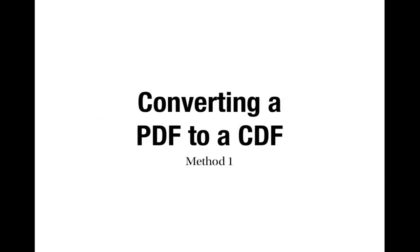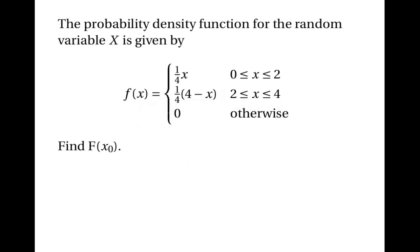The next thing to look at is converting a probability density function into a cumulative distribution function. There are several methods for doing this, and I'm going to show you three. You might like to think about which method you would prefer to use. The first method works when the probability density function is a linear function — when the graph is made up of straight lines — because each part of the definition is of the form y equals mx plus c, with no x squareds or x cubes.